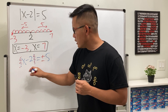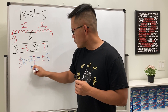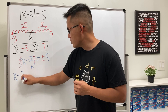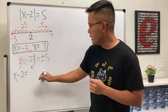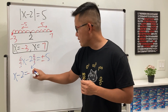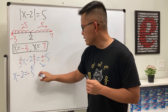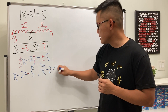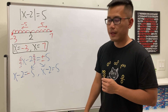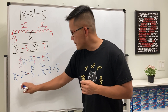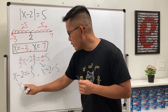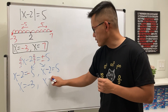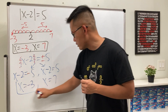We split into two equations: x minus 2 equals negative 5, and x minus 2 equals positive 5. Adding 2 to both sides of the first gives x equals negative 3, and adding 2 to both sides of the second gives x equals 7. And we're done.